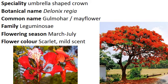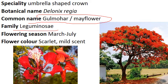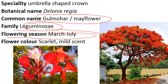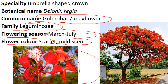Now comes to Delonix regia. This tree is very common throughout India — you can see it everywhere. Common name is Gulmohar, also called Mayflower. Family is Leguminosae, Pea family, so pods are available — large, lengthy pods. Flowering season is March to July. Flower color is scarlet red. Children are playing with the anthers and filaments, competing to see which anther will fall first. So this is a very aesthetically beautiful ornamental horticulture flower.